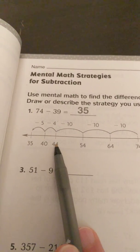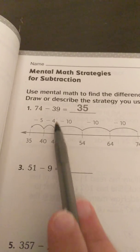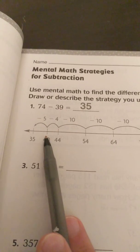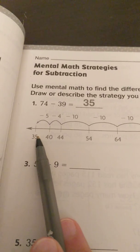And then they went from 44 and took away four out of the nine. So then it made it 40 and then subtract five more to make that 35.